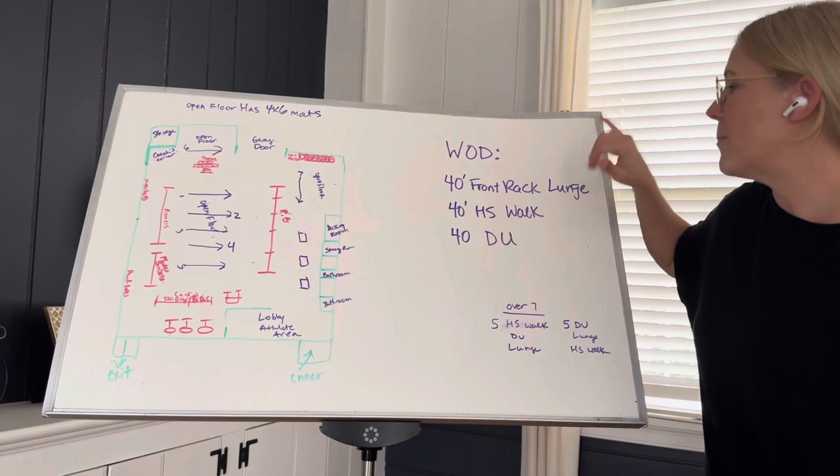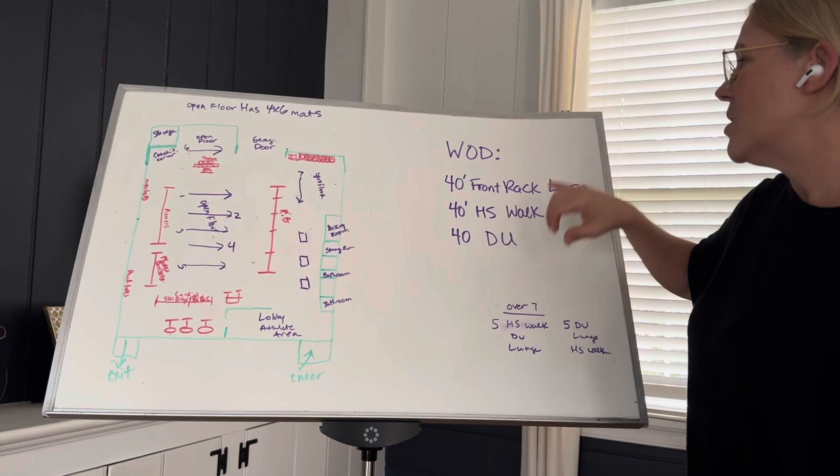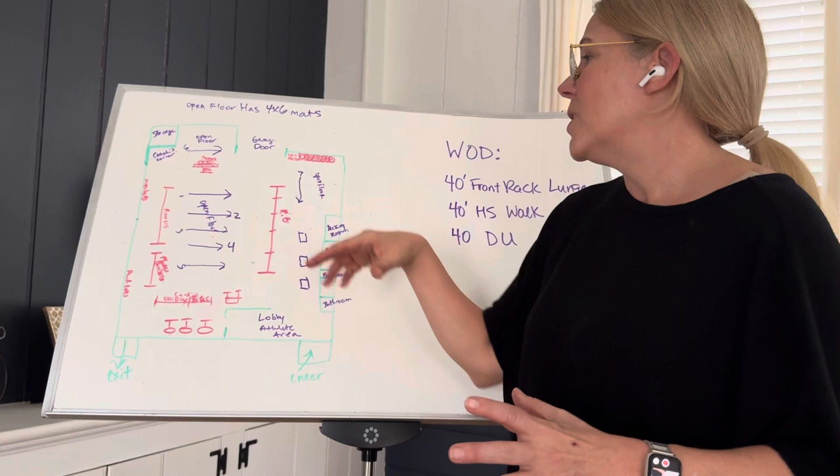So for this WOD, I picked the 10-minute AMRAP: 40 feet front rack lunge, 40 feet handstand walk and 40 double unders. So I needed a lot of empty space for this workout.